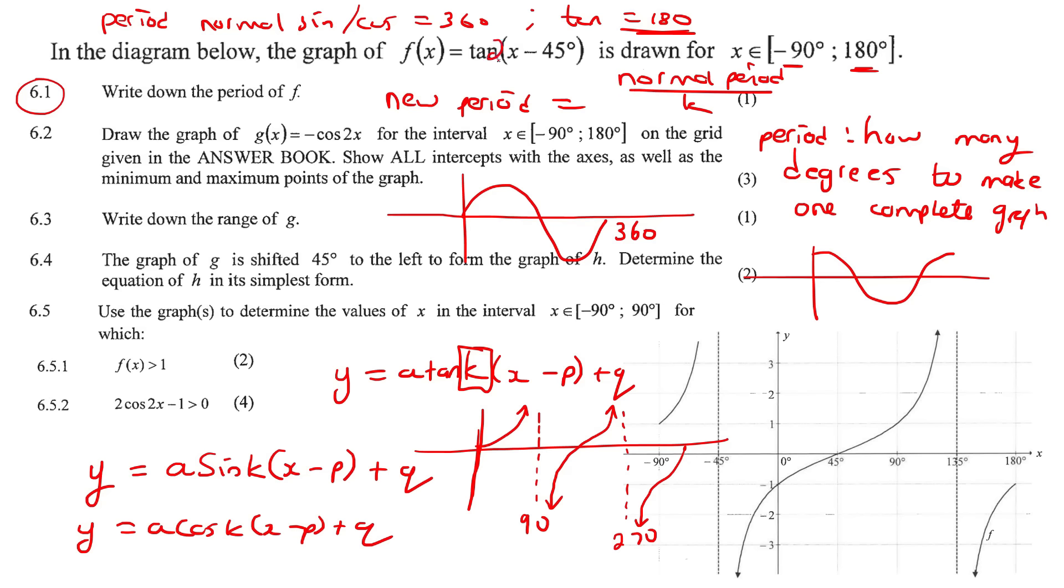So if there was like a number 2 over here, then you would say 180, which is the normal period, divided by 2. But there is no number there. You can think of it as a 1. So that means that this period is still going to be like a normal tan graph. Don't say 360. It's 180.